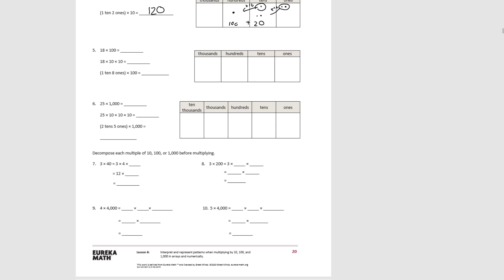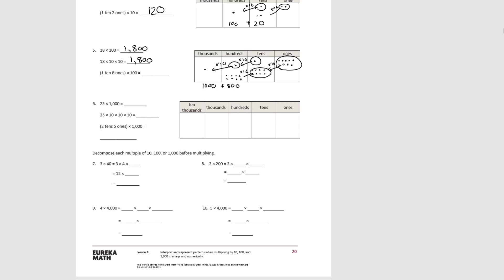For number five we start with eighteen — one ten and eight ones — and we're multiplying by a hundred, so we know we need to go by ten twice. The one ten moves to hundreds then to thousands. The eight ones move to tens then to hundreds. We end up with one thousand and eight hundred. Eighteen times a hundred is one thousand eight hundred, the same as eighteen times ten times ten.